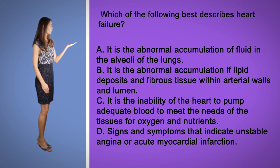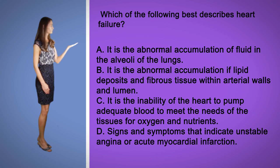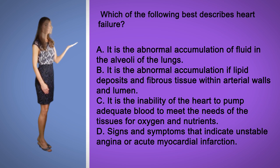A. It is the accumulation of abnormal lipid deposits and fibrous tissue within arterial walls and lumen. C. It is the inability of the heart to pump adequate blood to meet the needs of the tissues for oxygen and nutrients. Or D. Signs and symptoms that indicate unstable angina or acute myocardial infarction.